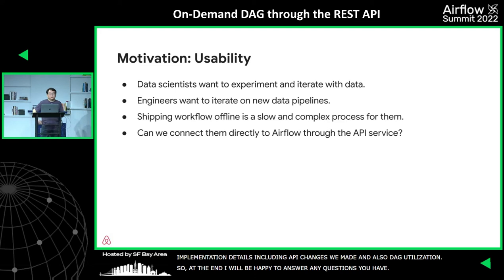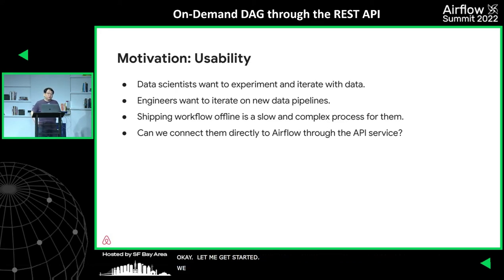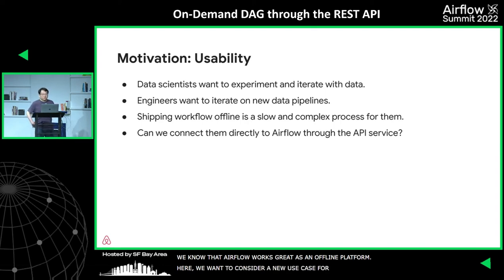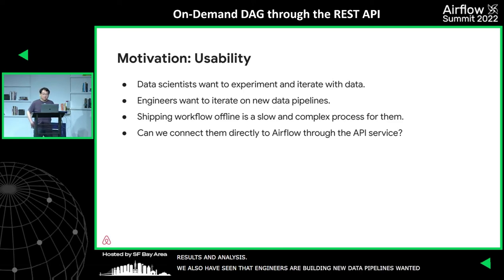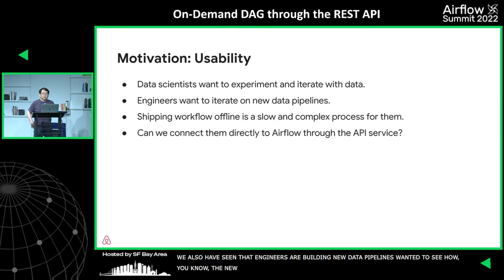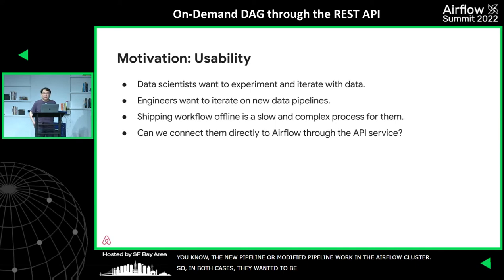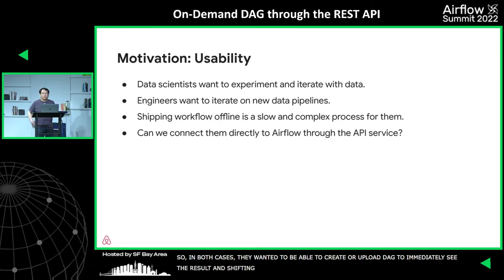We know that Airflow works great as an offline platform, but here we want to consider a new use case. We have seen that data scientists want to experiment and iterate with data. Based on their results and analysis, and engineers building new data pipelines wanted to see how a new or modified pipeline works in the Airflow cluster. In both cases they want to create or update a DAG and immediately see the result, so shipping the DAG offline is just too slow. The question for us is: can we connect them to the Airflow cluster through the API service?